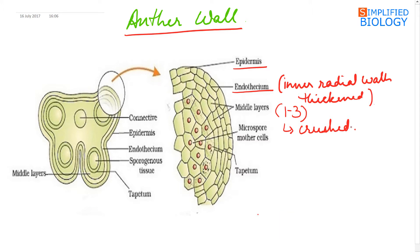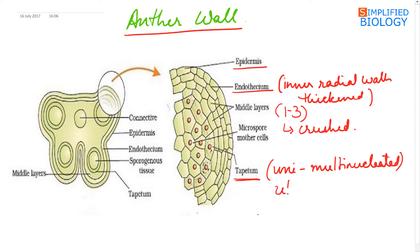In the fully mature anther, epidermis and endothecium are present. Inner to the middle layers is the tapetum, cells of which can be uninucleated or multinucleated, because the tapetum cells divide as the microspore mother cells divide and get utilized by the time the spores are formed. Their function is to provide nutrition to the developing spores. Inner to the anther wall lies the sporogenous tissue.